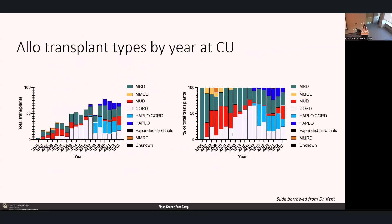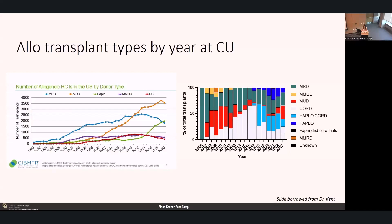This is a graphical representation of allotransplant types by year at CSU. Match-related donor has been very popular since we started doing transplants. We have also done a lot of cord transplants. But since about 2016, you can see the increasing popularity of haploidentical and haplocord transplants, related to the use of post-transplant cyclophosphamide. Nationally, matched unrelated donor is the highest proportion, followed by haploidentical transplants now in second place and matched-related donor in third, with lower incidence of cord blood and mismatched unrelated donor.